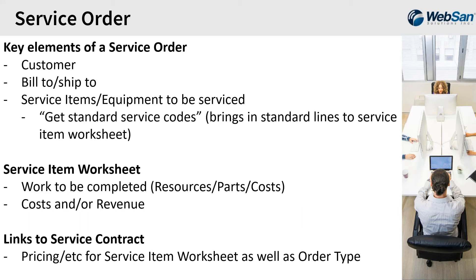The service item worksheet reflects the work to be completed — could be people and time, items or parts, other random costs, travel time, or just costs like a warranty service order, or revenue from a billable service order. It depends on whether the equipment is covered under warranty. The service order can link back to a service contract, which defines the SLA under which the item will be covered, whether things are covered by warranty, and what costs or prices apply. You can have a service order without a contract or with one.